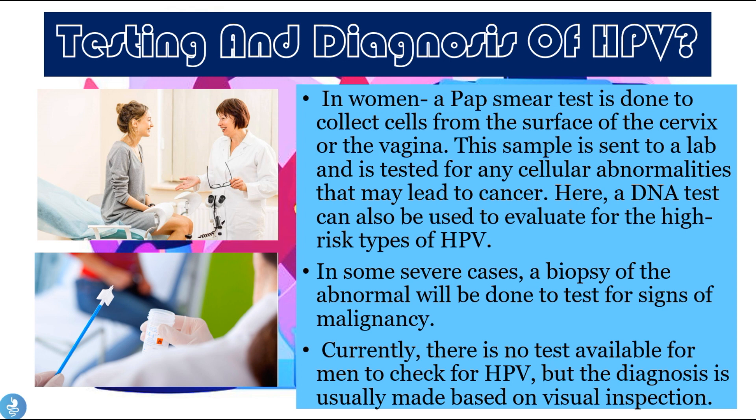Regarding testing and diagnosis: in women, a Pap smear test is done to collect cells from the surface of the cervix or vagina, and this sample is sent to a lab to be tested for any cellular abnormalities that may lead to cancer. A DNA test can also be used to evaluate for high-risk types of HPV. In more severe cases, a biopsy of the abnormal lesion will be done to test for signs of malignancy. Currently there is no test available for men to check for HPV.